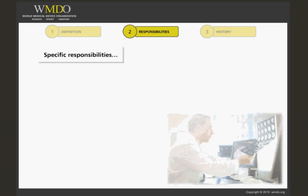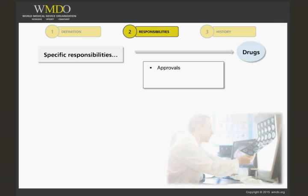Some of the FDA's specific responsibilities for drugs include product approvals, over-the-counter (OTC) and prescription drug labeling, and drug manufacturing standards.